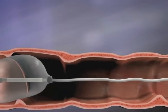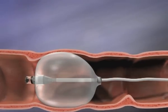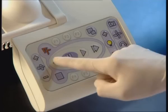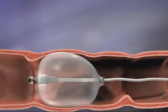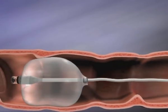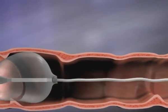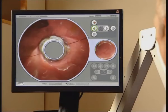The speed of the balloon's backwards travel may be adjusted by the operator at the press of a button, and the direction of balloon motion can be reversed at any time in order to take another look at areas already past.